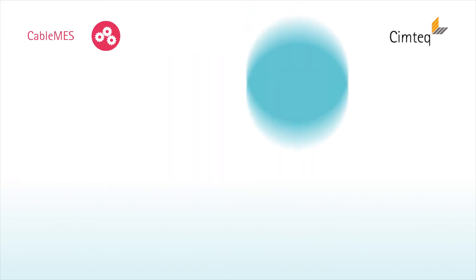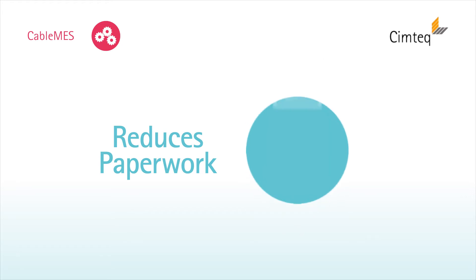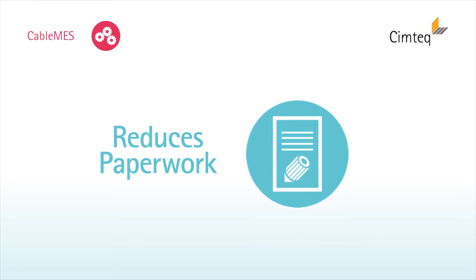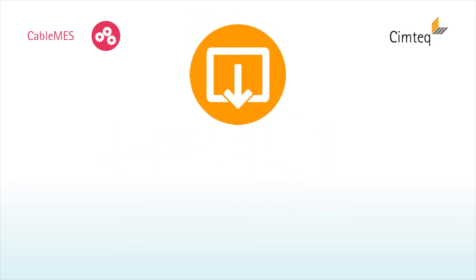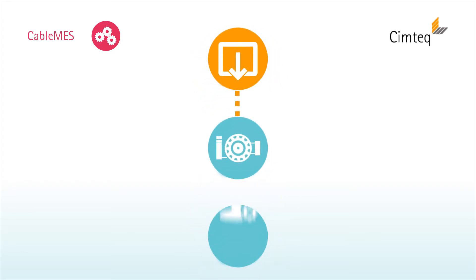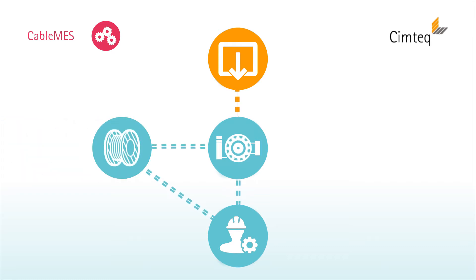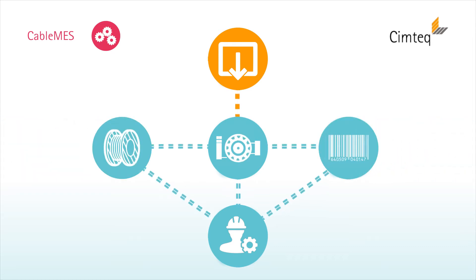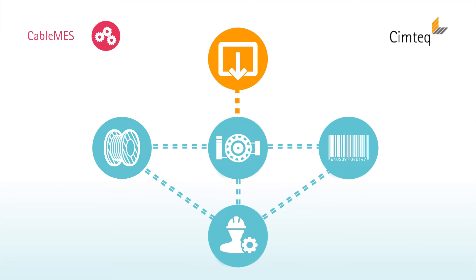Cable MES reduces paperwork and manual data entry by downloading machine settings and quality plans directly to the machines. Operators can quickly and accurately set up machines, assign materials and track progress through barcodes and virtual warehousing.